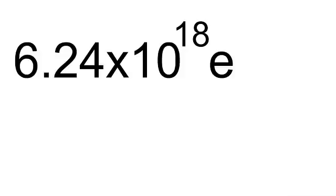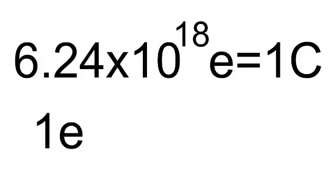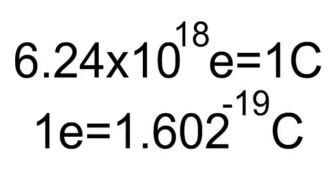It would take 6.24 times 10 to the 18 electrons to make up one coulomb of charge. Or, looking at this a different way, you could say that each electron or each proton has only a tiny fraction of a coulomb of charge. One electron has 1.602 times 10 to the minus 19 coulombs of charge.